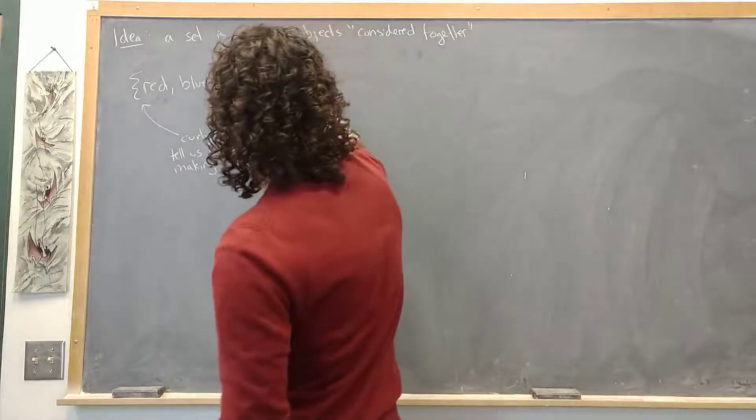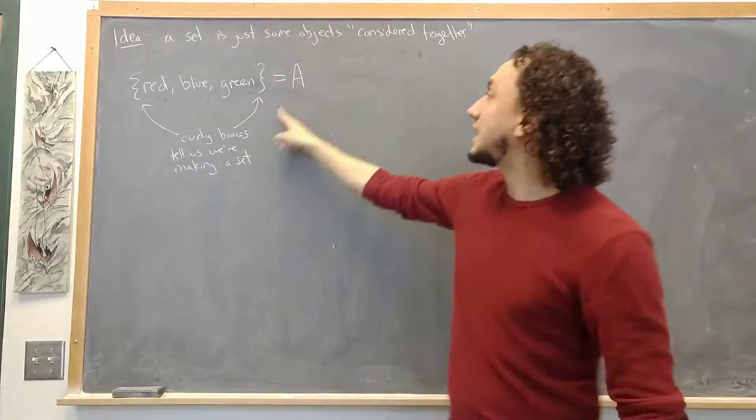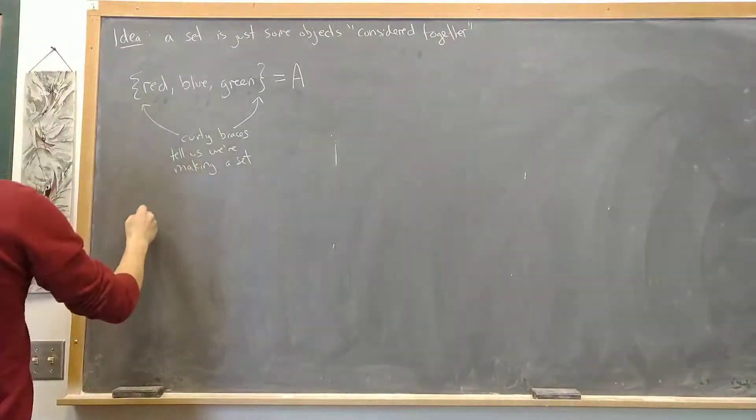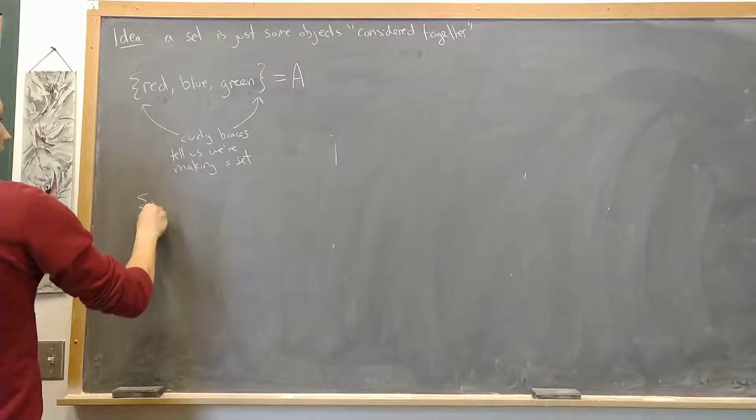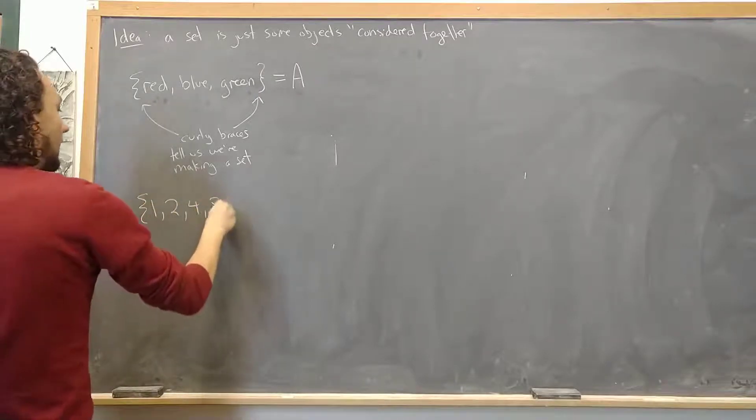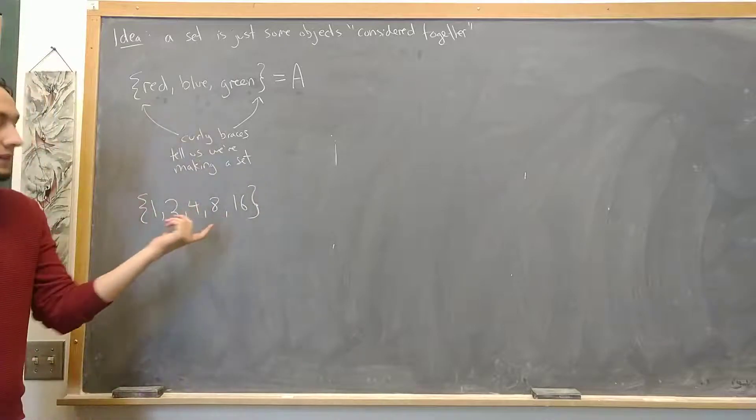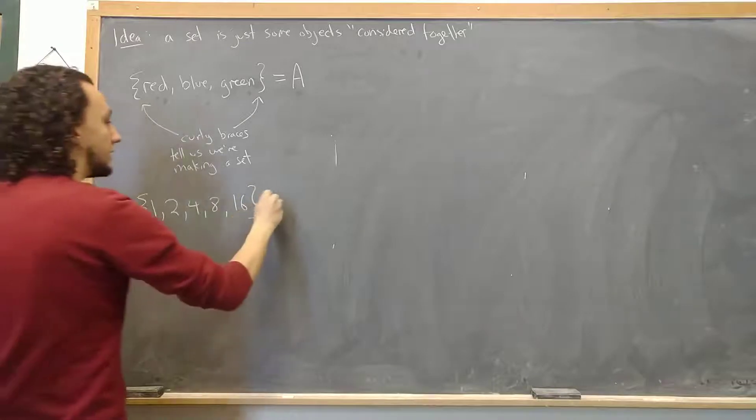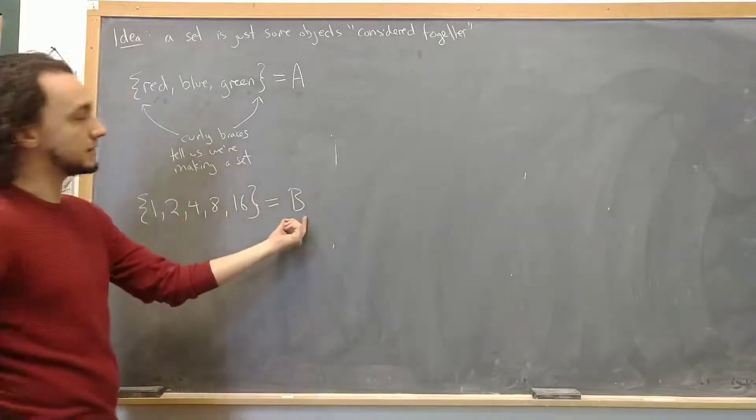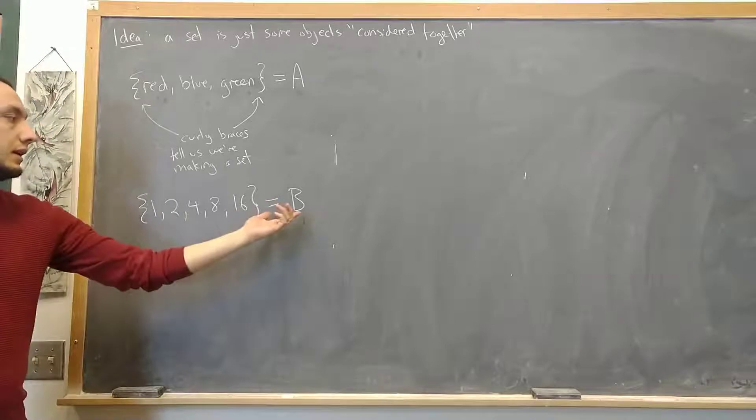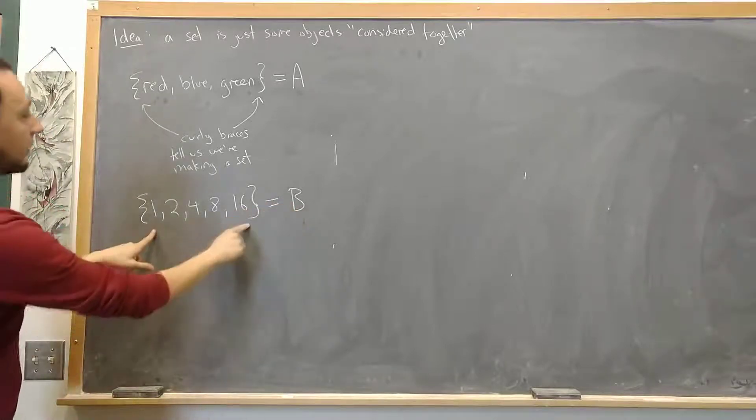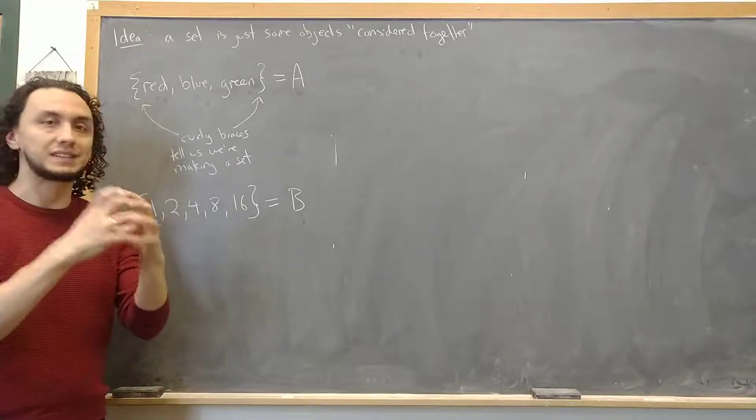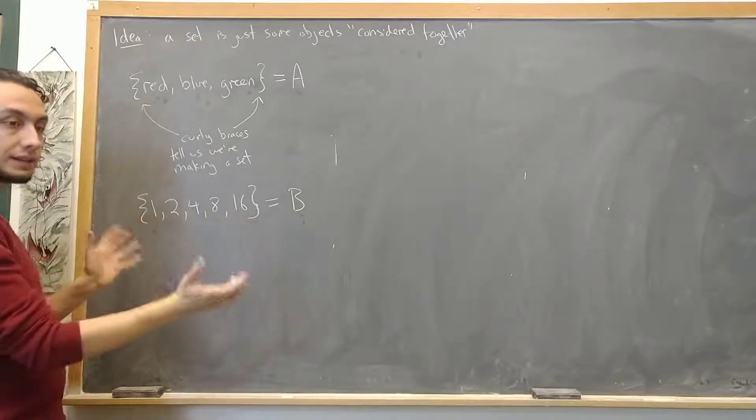And I can even give this set a name. I call this the set A. So A is a set that contains three colors. Of course there are lots of other sets. Some more familiar sets like for example the set of numbers 1, 2, 4, 8, 16. This is a set. It has five numbers in it. Numbers are familiar objects. The set is a different type of object. I could give it a name if I wanted to. I could call it B. This is just naming it. And now I have not just these five numbers but also a new object which is the set of those five numbers. Think of it as a single thing but it has this internal structure. That's all the set is.